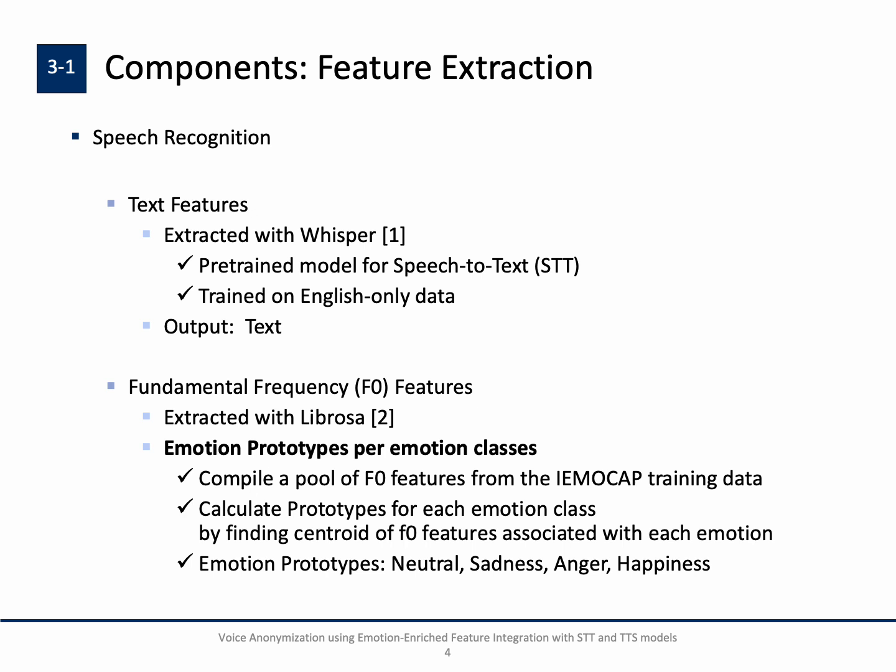Let's go through the components one by one. First, feature extraction. We have a speech recognition model, Whisper, a pre-trained STT model. This Whisper model is trained on English-only data and on a broad and diverse distribution of audio. We get the text data utilizing this STT model. For extracting fundamental frequency features, we use the LIBROSA library.